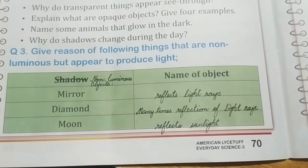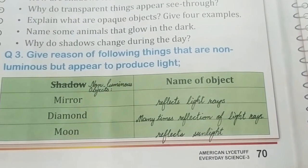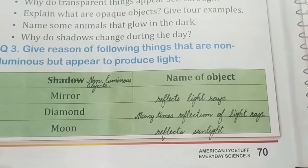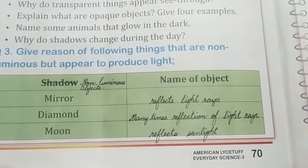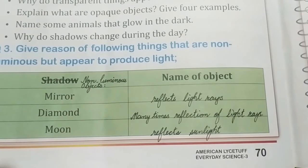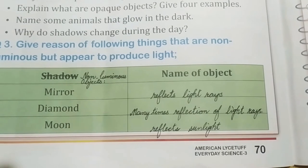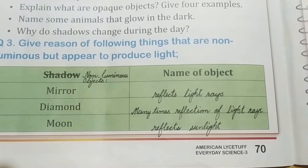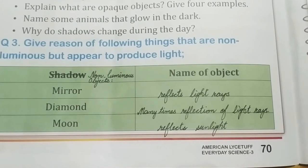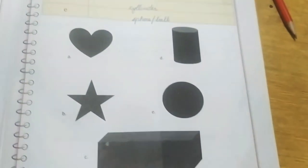Question number 3 asks to give reasons why the following things are non-luminous but appear to produce light. Mirror: the reason is it reflects light rays, that is why it appears to be luminous. Diamond: it has many times reflection of light rays. Moon: it appears to be luminous because it reflects sunlight.